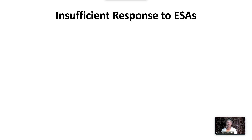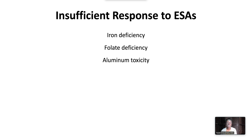Insufficient response can result from iron deficiency. For this reason, parenteral iron is given to maintain serum ferritin levels greater than 100 nanograms per milliliter. Insufficient response to ESAs can also occur with folic acid deficiency, aluminum toxicity, blood loss, or inflammation.